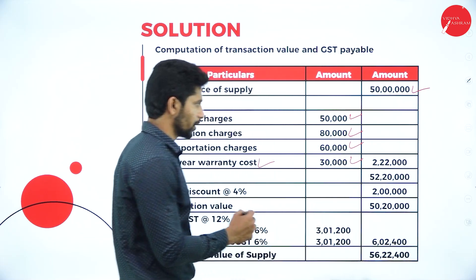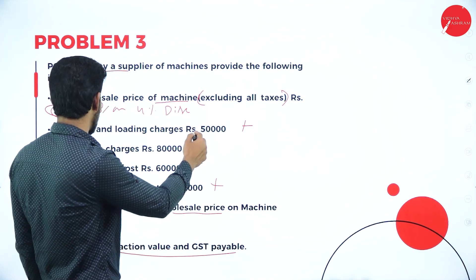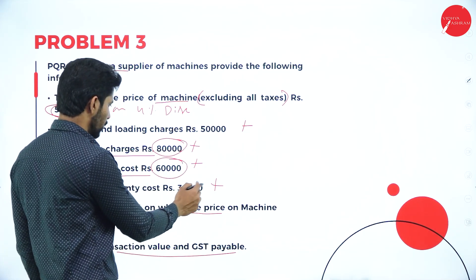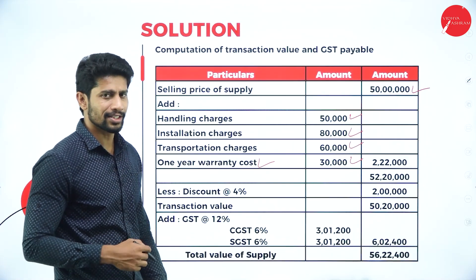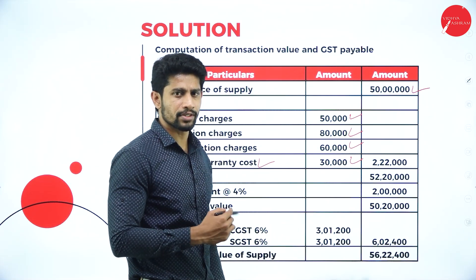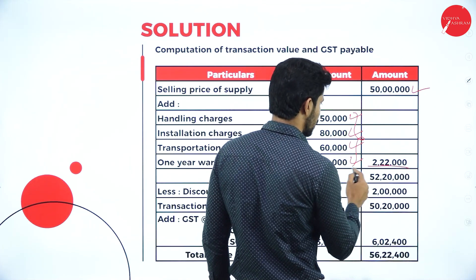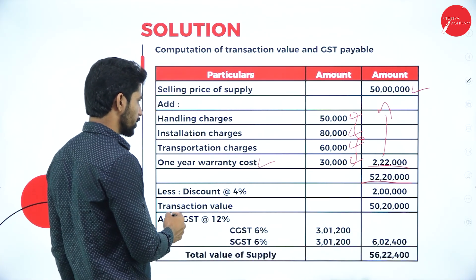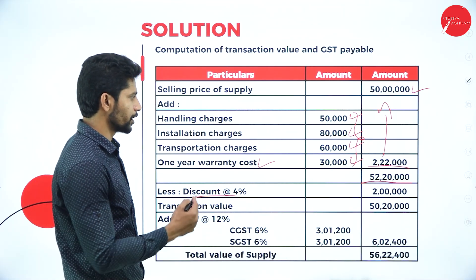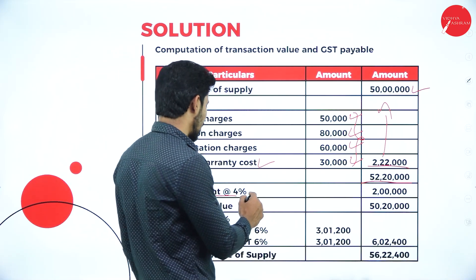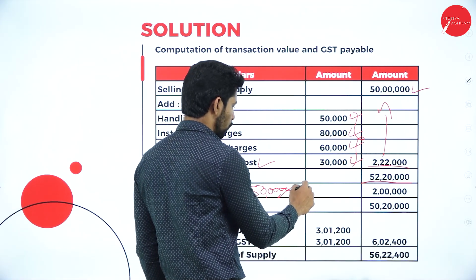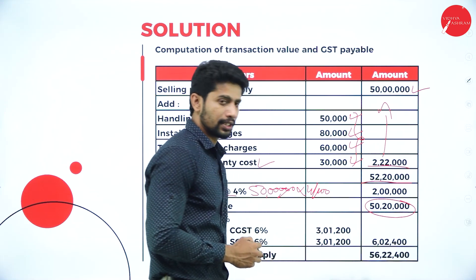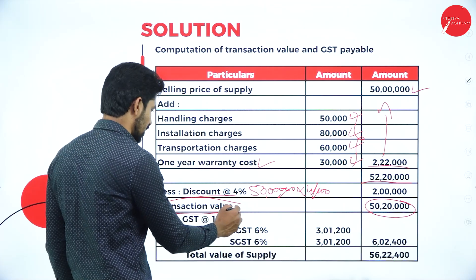These amounts are all paid by the recipient and must be included. The total of these four items is Rs. 2,22,000. Add Rs. 2,22,000 with Rs. 50 lakhs to get Rs. 52,22,000. Now deduct the discount at 4% on Rs. 50 lakhs, which is Rs. 2 lakhs. From Rs. 52,22,000 deduct Rs. 2 lakhs. You get a balance of Rs. 50,20,000. That amount is called the transaction value.